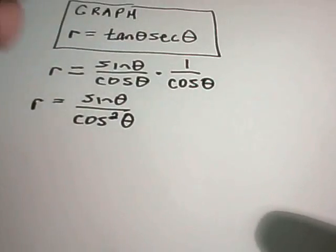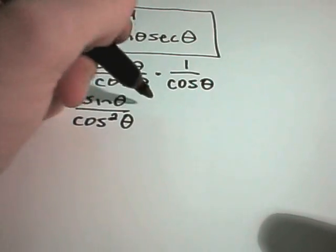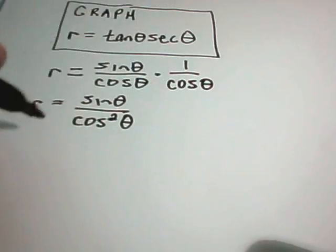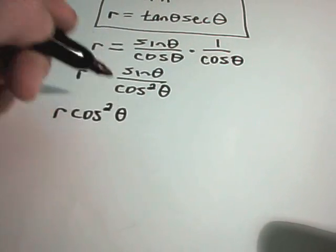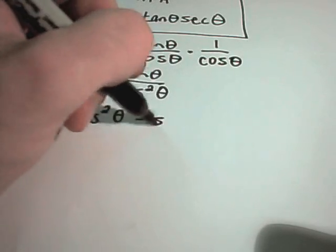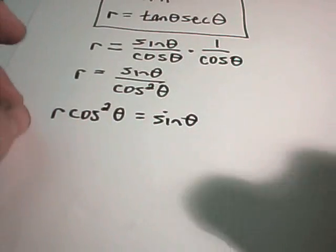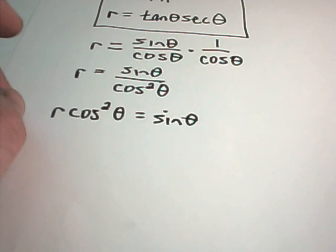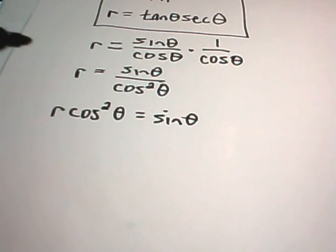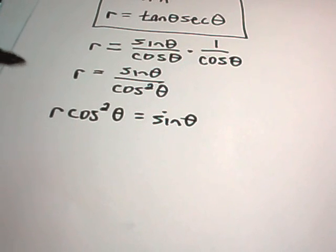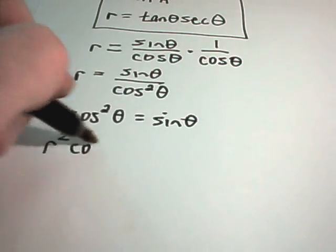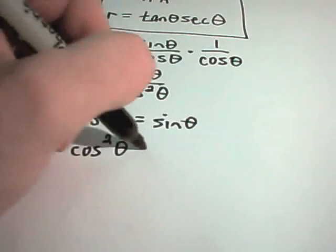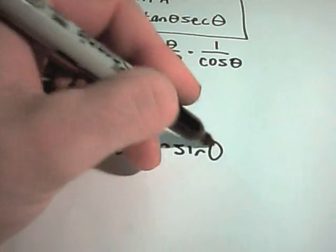This gives us that r equals sine of theta over cosine squared theta. And now I'm going to just multiply both sides of this by cosine squared theta. And that will give me r times cosine squared of theta equals sine of theta. And now, at this point, what I'm going to do is simply multiply both sides by r. I'll get r squared cosine squared theta equals r sine theta.